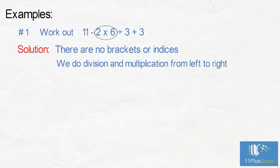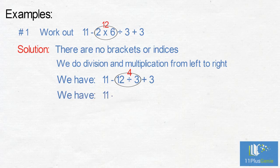We first do 2 times 6 equals 12. We have 11 minus 12 divided by 3 add 3. We now do the divide 12 divided by 3 equals 4. We have 11 minus 4 add 3.